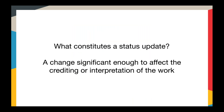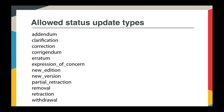To trigger a Crossmark status update, changes to the content have to be significant enough to affect the crediting or the interpretation of the work. There's a limited set of events that meet this criteria in scholarly publishing. These are the 12 status update types that can be used in Crossmark, drawn up by a committee of publisher members. There may be other events considered minor updates — such as publishing the version of record when an accepted manuscript had been available, or the addition of comments or replies — but these are not considered significant enough to trigger a warning via Crossmark.